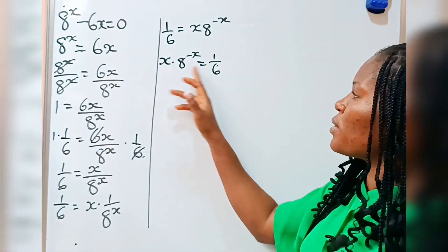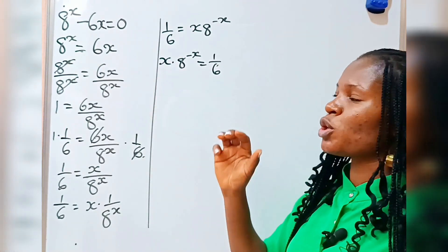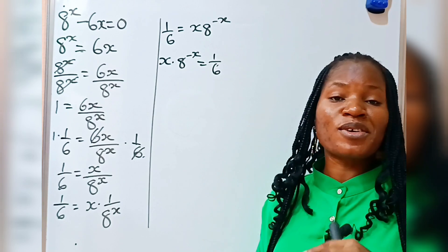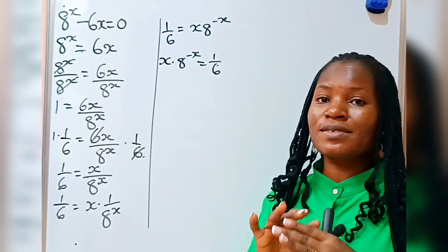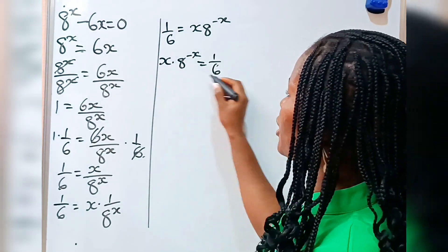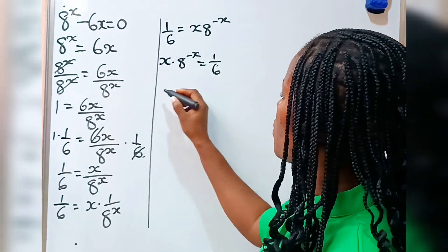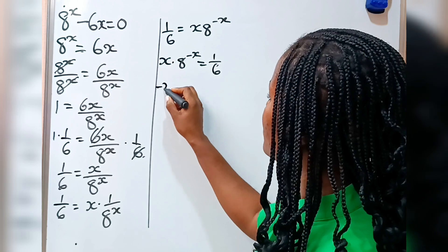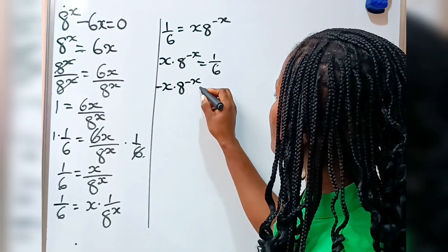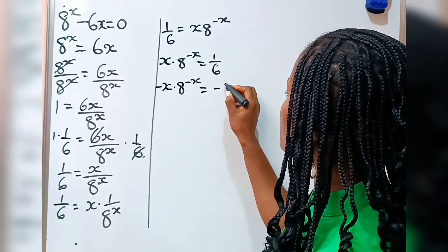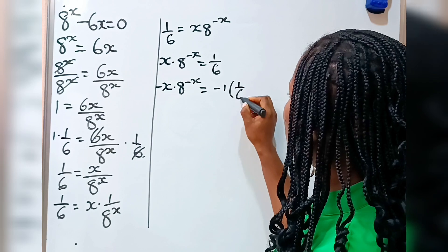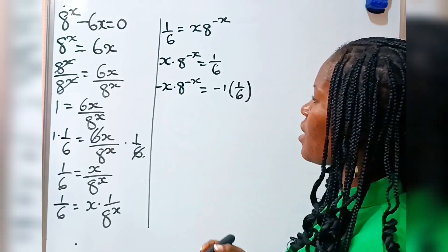Now let's multiply both sides of this equation by minus 1. I will explain why. So if we multiply through by minus 1, we are going to have minus x multiplied by 8 to the power of minus x is equal to minus 1 multiplied by 1 over 6.